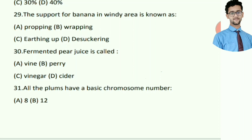Fermented pear juice is called — right answer: peri, option B.